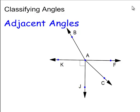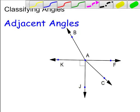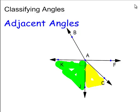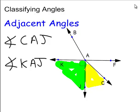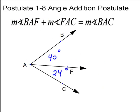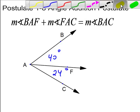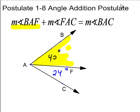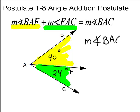Adjacent angles — I already covered that. Let's pick another pair: angle CAJ is adjacent to angle KAJ. Angle addition postulate: if you have two adjacent angles, you can add them together to get the measure of the whole angle. So angle BAF is 40 degrees and angle FAC is 24 degrees, and together when you add 40 and 24 you get 64. So the measure of angle BAC is 64 degrees.